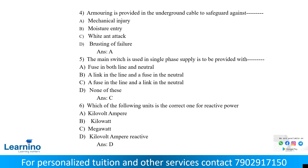Armoring is provided in underground cables to safeguard against mechanical injury. One or two layers of galvanized steel wire or galvanized tape are used for armoring. It protects the underground cable from mechanical damage. The answer is A.